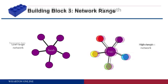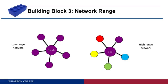The third building block is network range — a measure of how many different groups you're connected to. Sarah and Ted both have five collaborators, but say Sarah works in marketing: all five of her connections are within the marketing department. Ted, on the other hand, is connected to someone in marketing, but also to someone in R&D, human resources, finance, and operations. So Ted has a much higher network range. When you have higher network range, you're connected to many more different sources of information, giving you a much greater ability to get information from a wider range of sources.